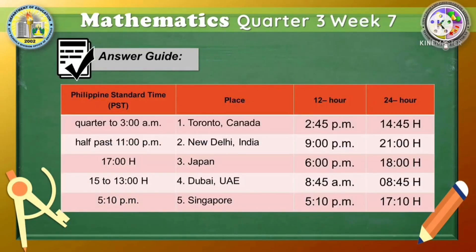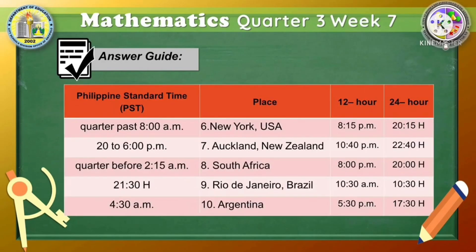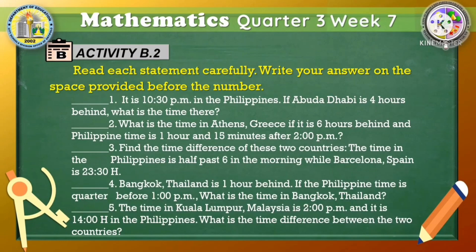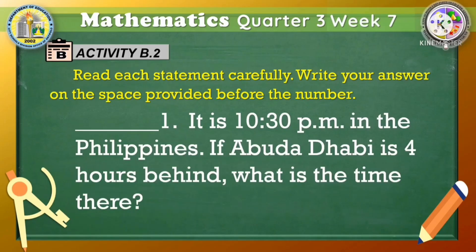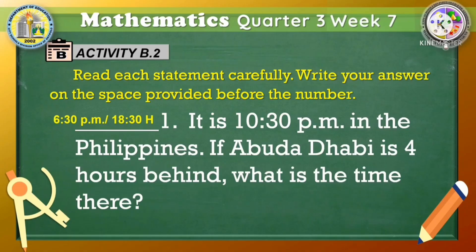Time is up. Here are the answers. Did you get all the answers correctly? Great job. You are now ready for the next activity. For Activity B.2, read each statement carefully and write your answer on the space provided before the number. I will do the task for item number one and you will do the rest. It is 10:30 PM in the Philippines. If Abu Dhabi is four hours behind, what is the time there? All you need to do is subtract four hours from 10:30 PM, and the answer is 6:30 PM.